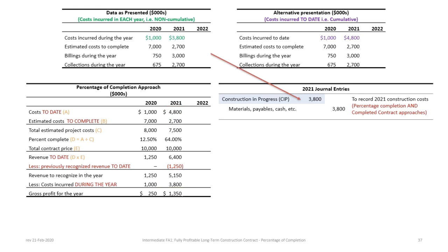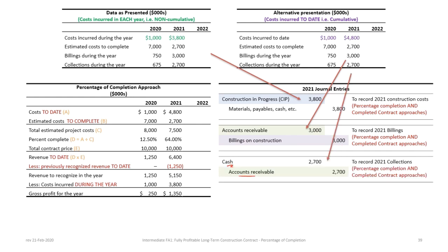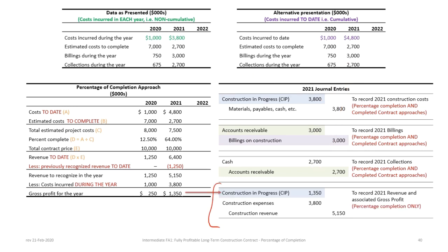Now we use this information to create the 2021 journal entries. We debit Construction in Progress and credit Materials, Payables, etc. for $3.8 million — the 2021 construction costs, not the cumulative costs. We record billings by debiting Accounts Receivable and crediting Billings on Construction for $3 million. Remember: the billings account is not a revenue account — we record revenue separately. Though the client is billed $3 million, revenue in the year is actually $5.15 million. Collections of $2.7 million are also recorded.